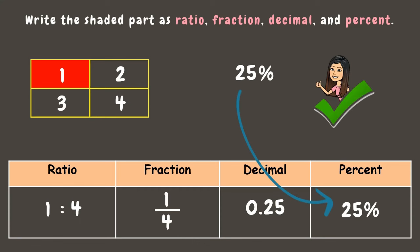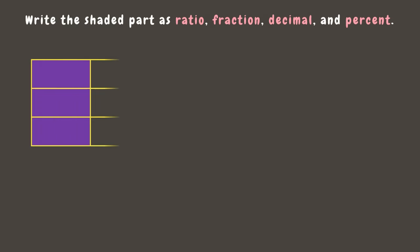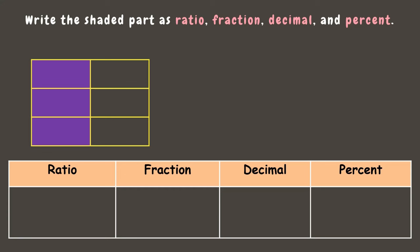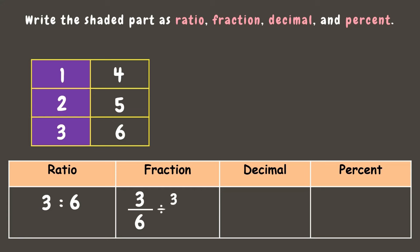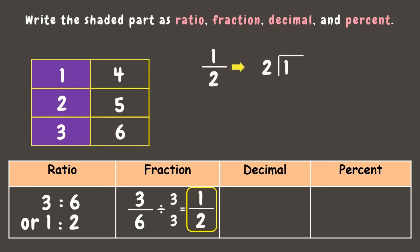Let's have one last example. Write the shaded part as ratio, fraction, decimal, and percent. We can see that 3 parts are shaded out of 6 parts total. The ratio is 3 is to 6, and in fraction it is 3/6. This fraction can be reduced to its lowest term by dividing by the GCF, which is 3, giving us one half. Therefore the ratio can also be written as 1 is to 2. For decimal, we divide 1 by 2. Since 1 is smaller than 2, add point zero: 10 divided by 2 is 5, 5 times 2 is 10, remainder 0. Our answer is 0.5.